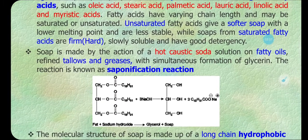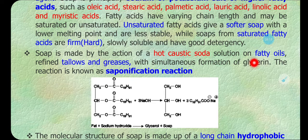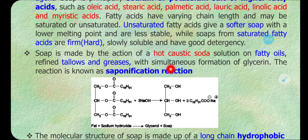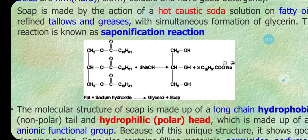Soap is made by the action of hot caustic soda solution on fatty acids or fatty oils — for example, refined tallows and greases — with the simultaneous formation of glycerin and soap. This reaction is called the saponification reaction.